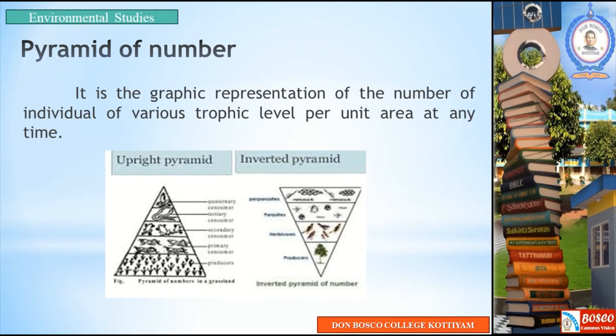At first, let us see what is a pyramid of numbers. It is the graphical representation of the number of individuals at various trophic levels per unit area at any given time.